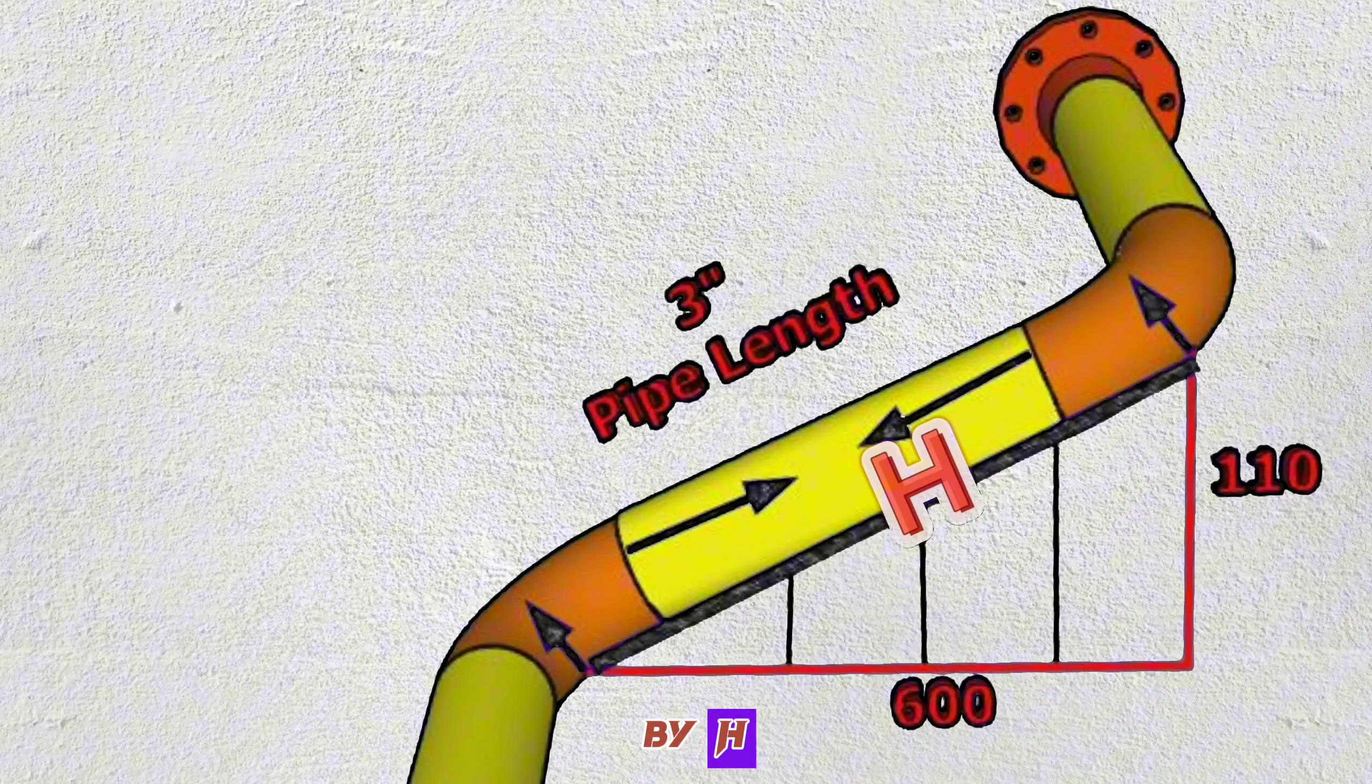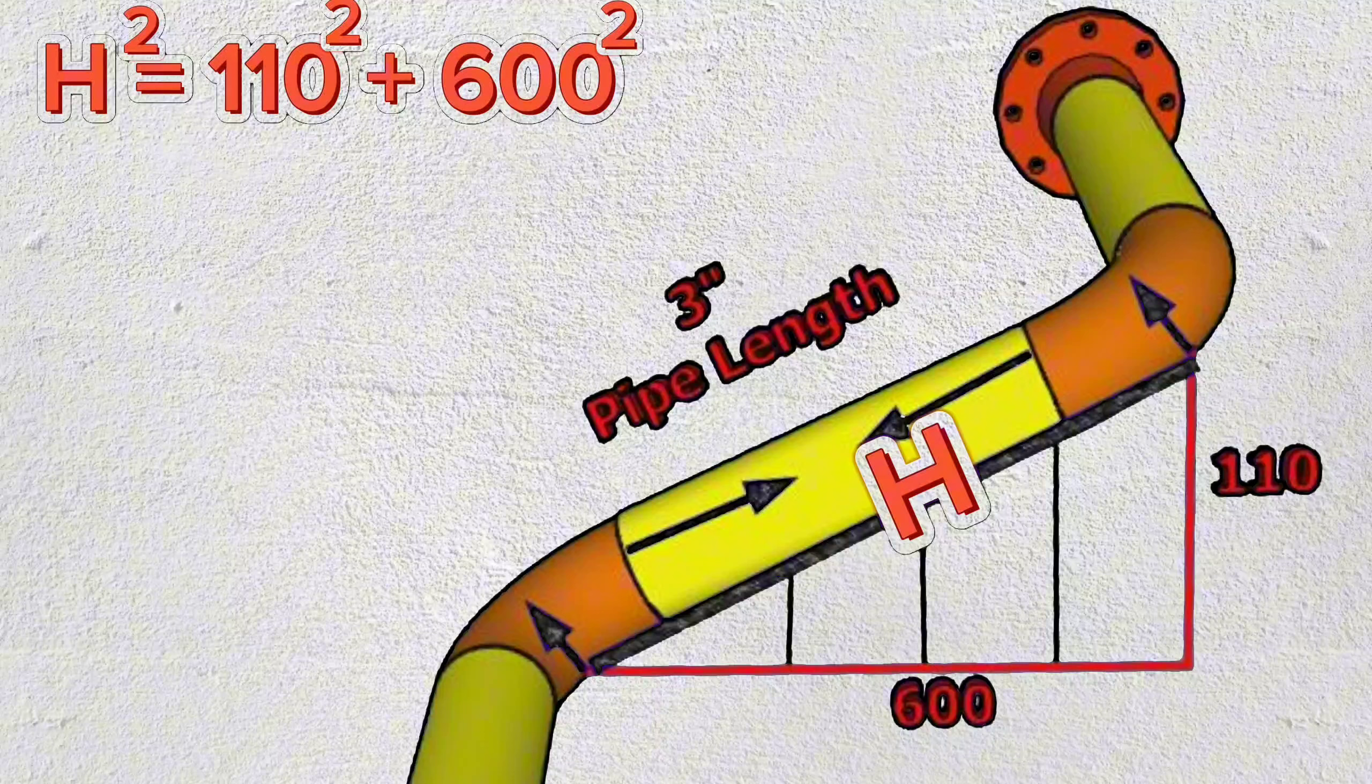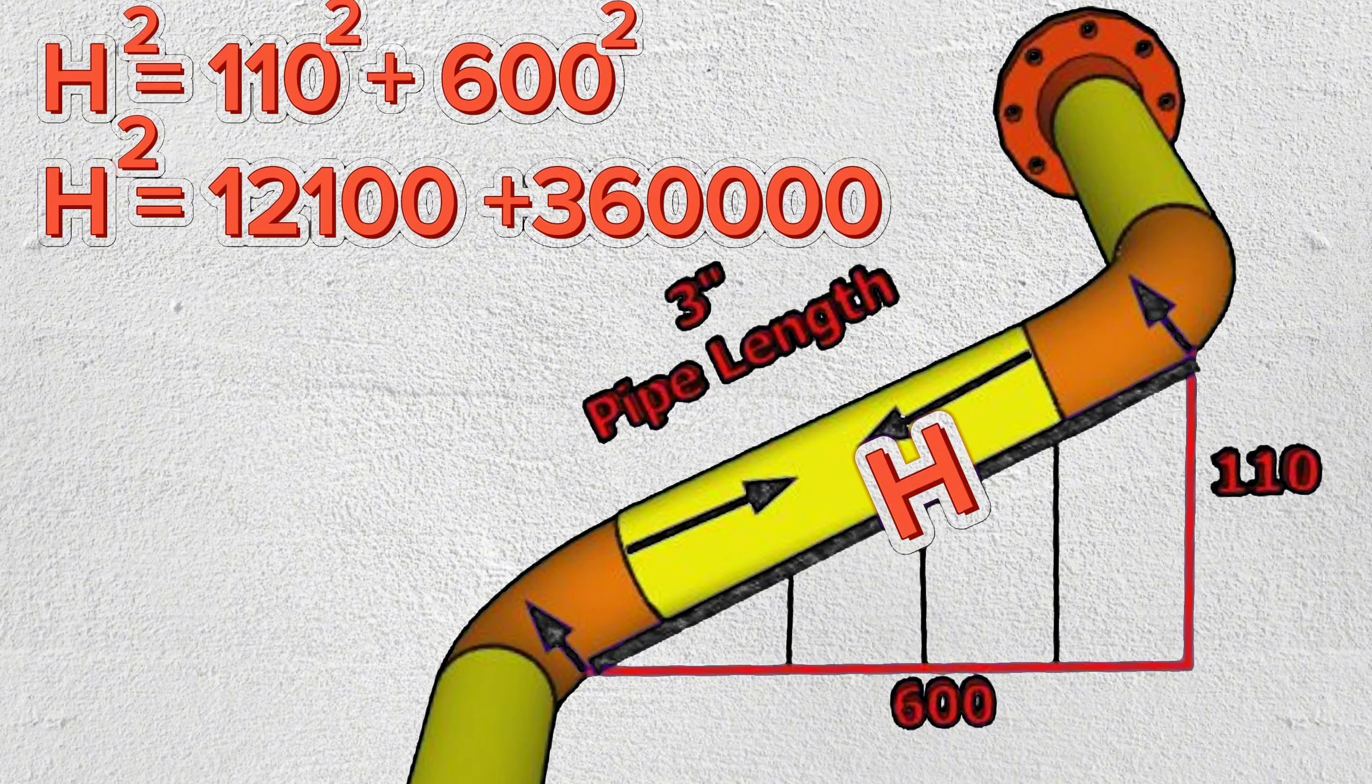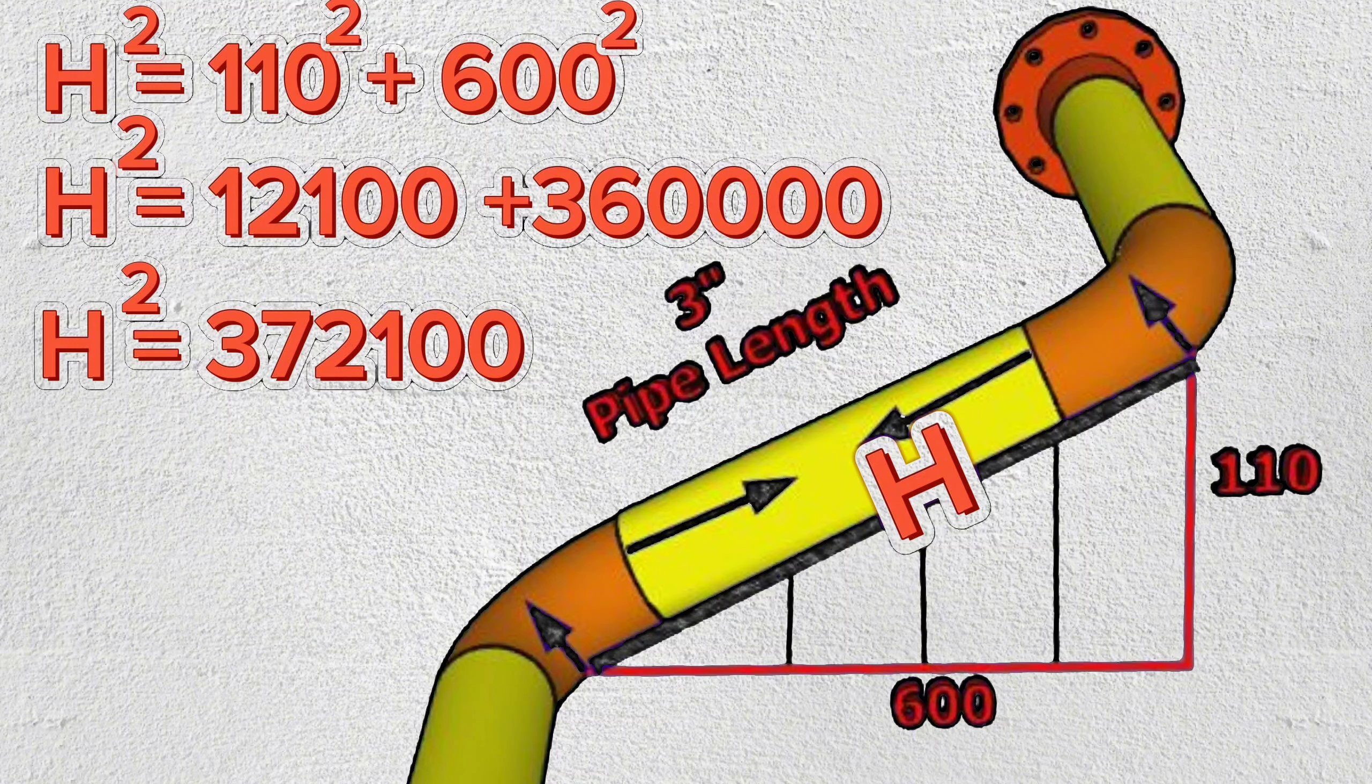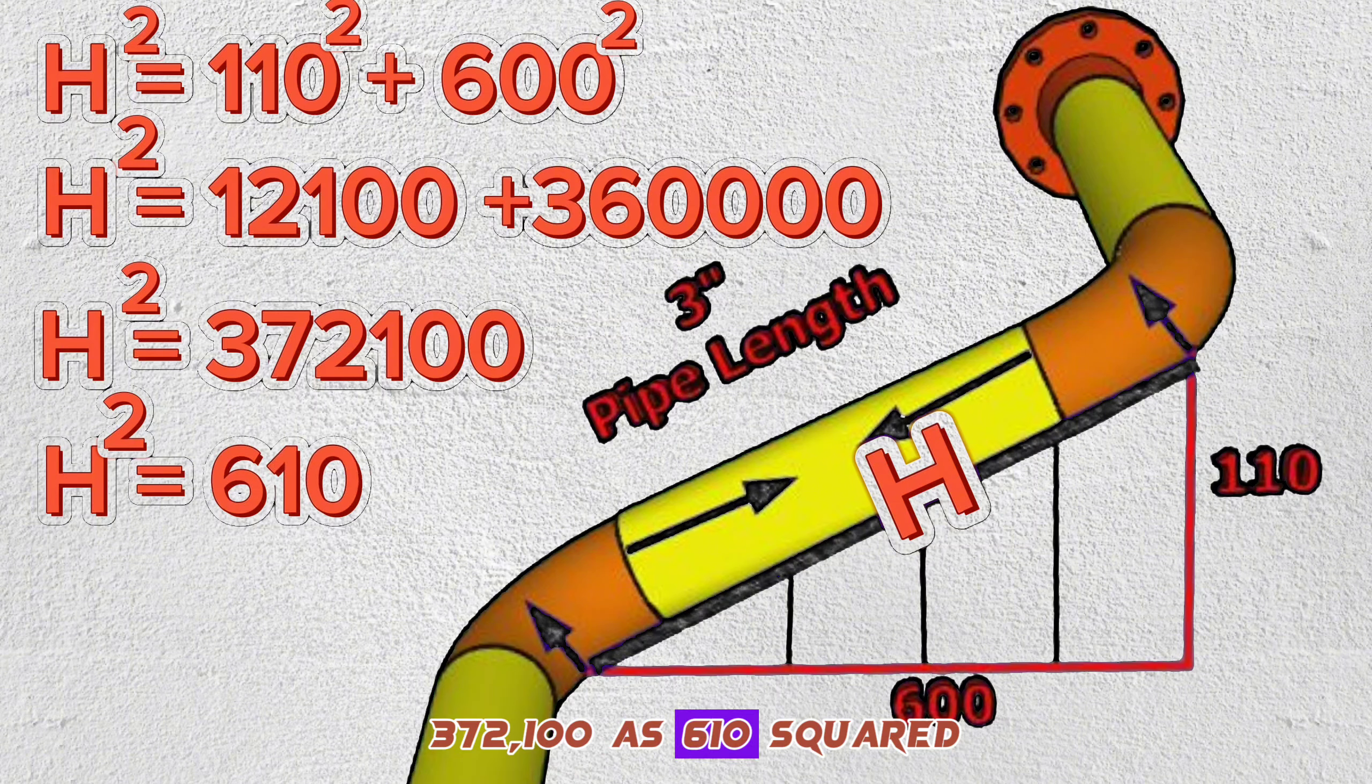If we denote hypotenuse by H, then the square of H is equal to the square of 110 plus the square of 600. We continue the calculation, the square of H is equal to 12,100 plus 360,000. The square of H is equal to 372,100. Here using the calculator we find that the square root of 372,100 is 610.